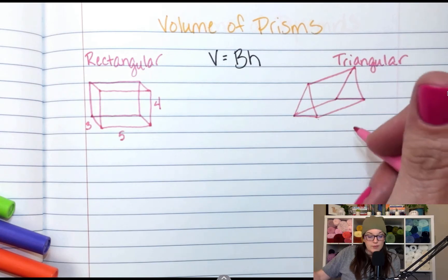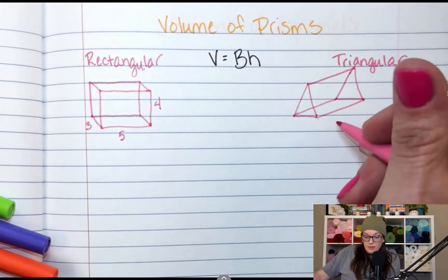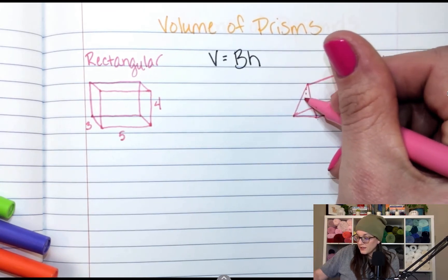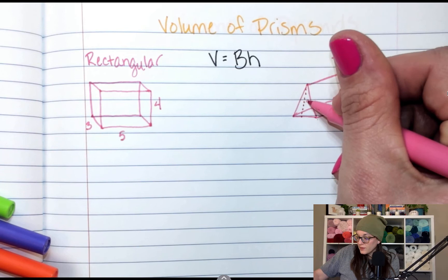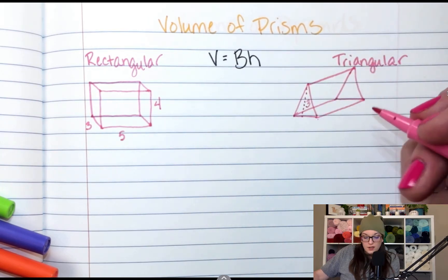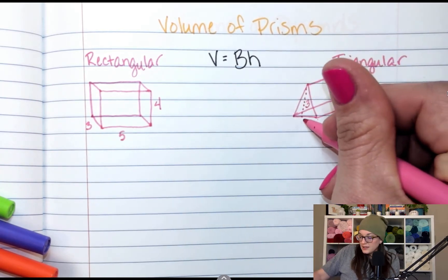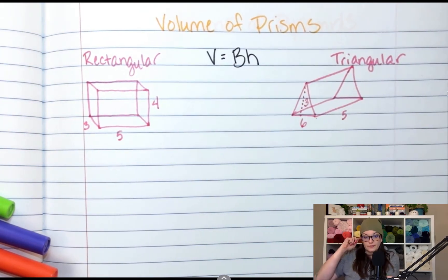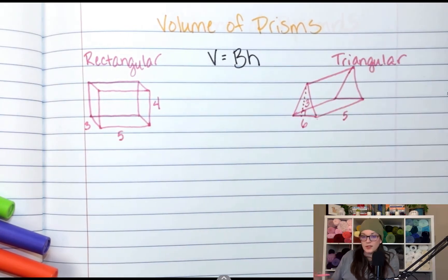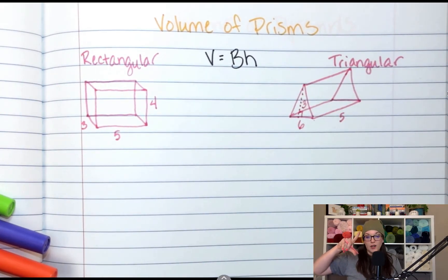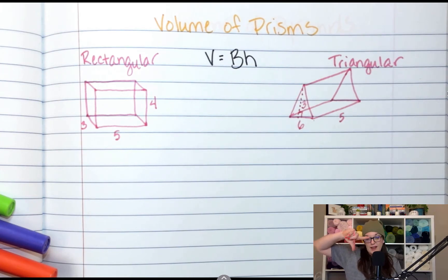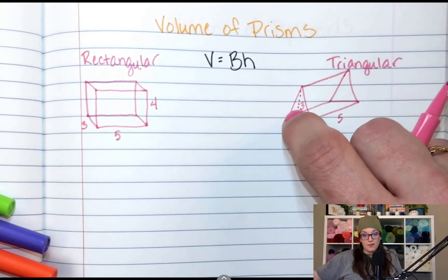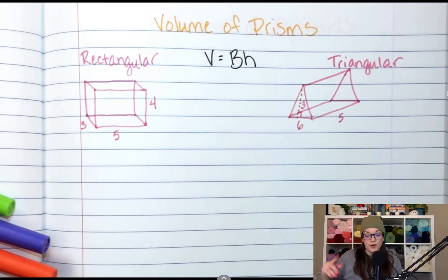Now, the dimensions on this one are going to be H is three, so this little dotted line right here, that is three, the width here is six, and this is five. Make sure you put your little right angle sign, because remember, find your right angle on your triangles, and that points to the base and the height of the triangle. If they gave you the slant of one of these, that's to throw you off. Don't use that for this.